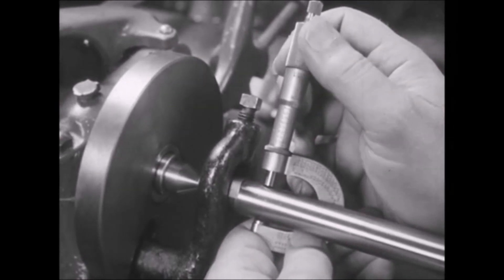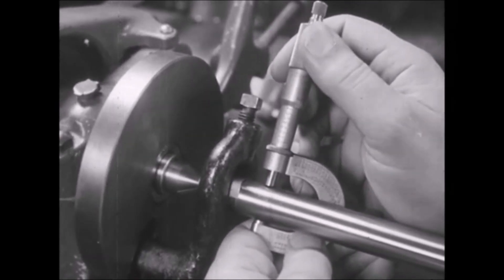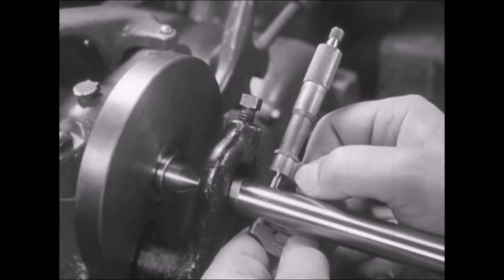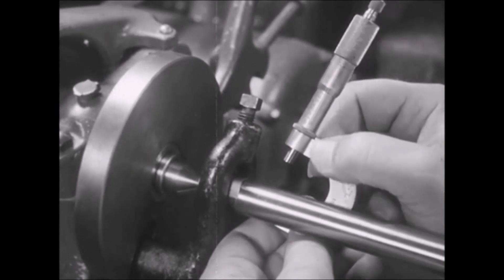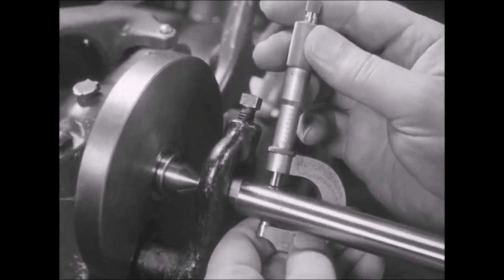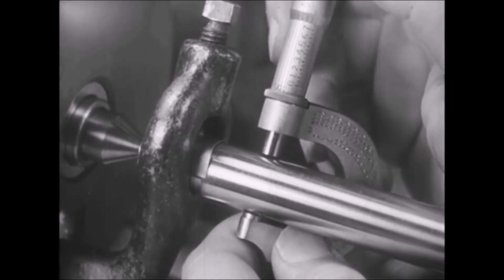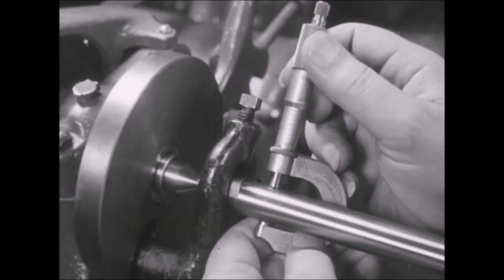Gentle pressure of the thumb and index finger on the thimble is sufficient to bring the spindle into contact with the work. As the spindle reaches the work, the drag of the fingers over the knurled surface of the thimble tells the operator when he uses the right pressure.